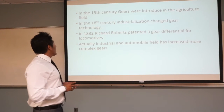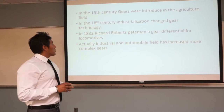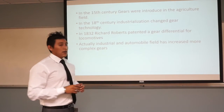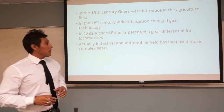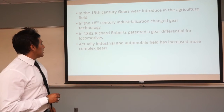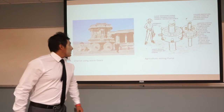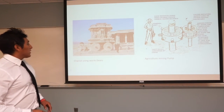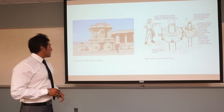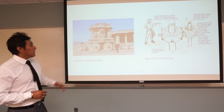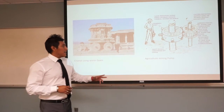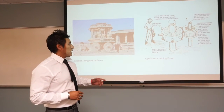In 1832, Richard Roberts patented a gear differential for locomotives. Industrial and automobile fields have since increased the complexity of gears. Here we can see two pictures — the first shows a carrier using worm gears, and the other shows a gear made of wood that people used in agriculture and mining.